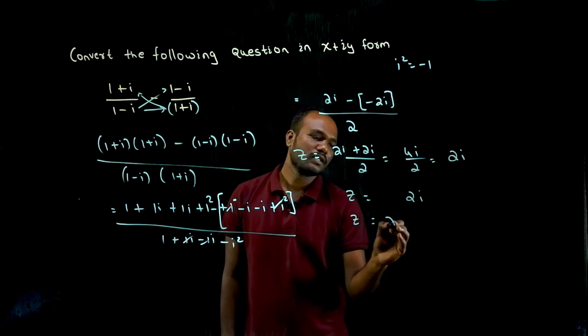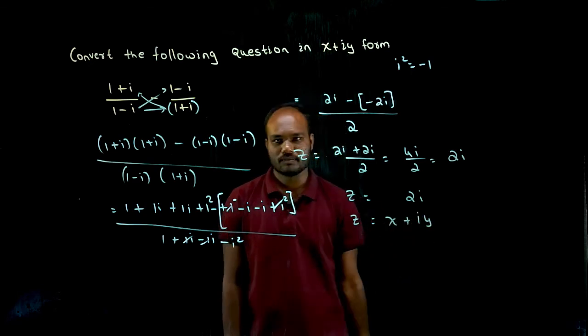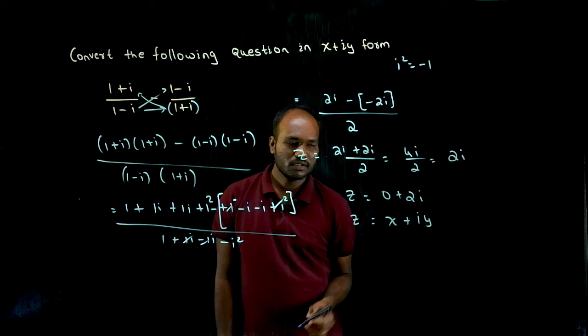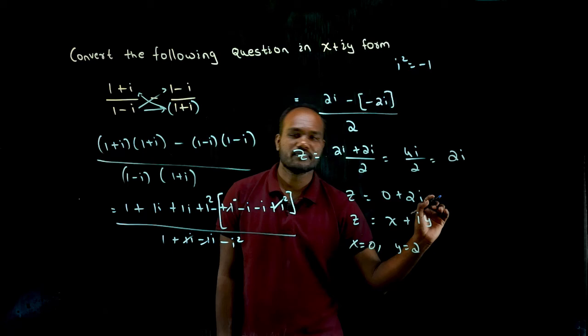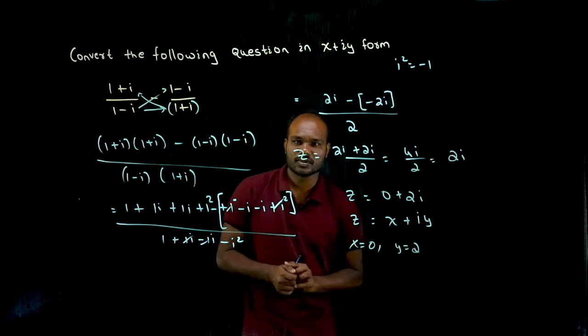What we want? We want it in x plus iy form. So can I write 0 plus 2i, right? So what is the value of x? x value is 0. What is the value of y? y value is 2. Is that good? Yes or no? Yes?